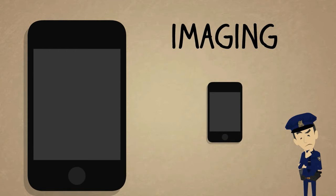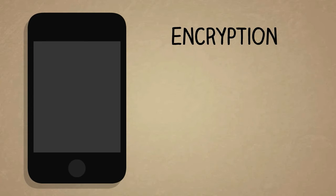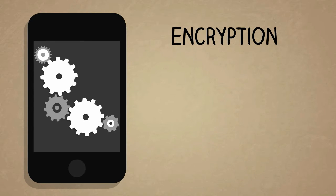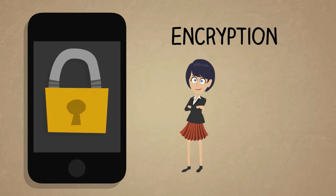But sometimes, police run into a problem, and that's when a phone's hard drive is encrypted. That means the data on the hard drive is translated into a secret code that can only be opened by a sophisticated key that only the user knows. Encryption is optional on most smartphones, really meant for security if a user wants it.